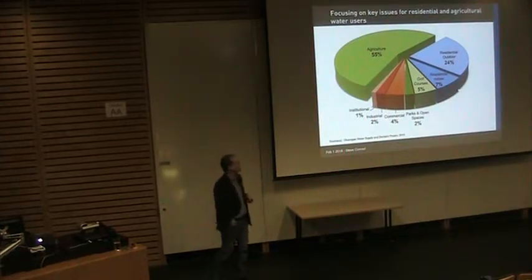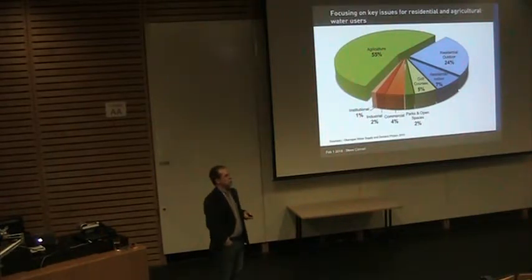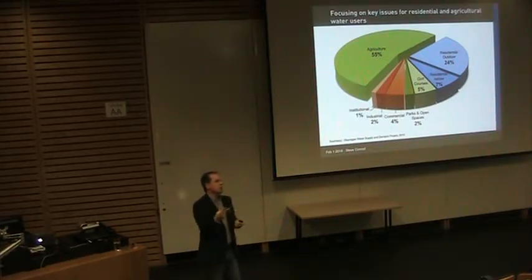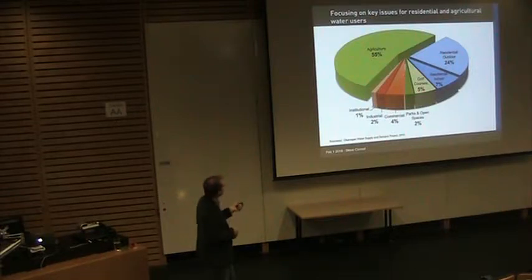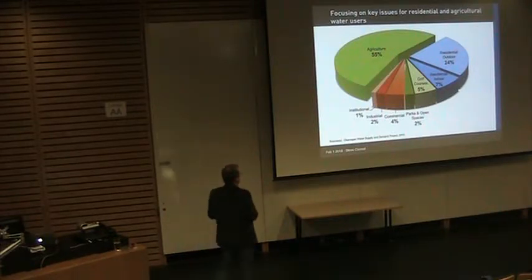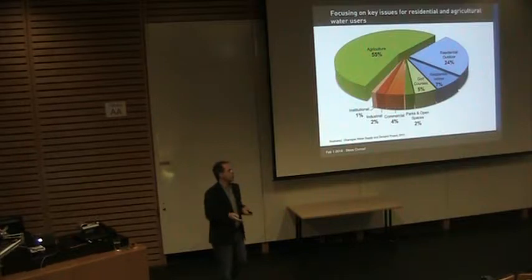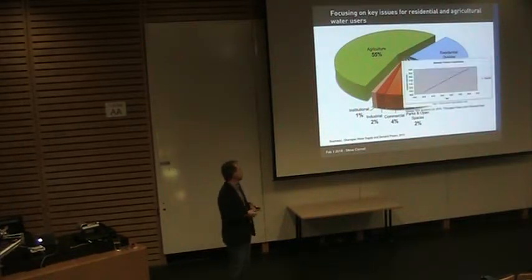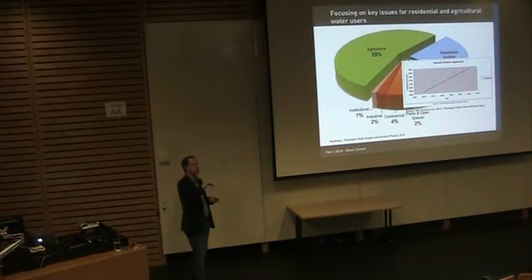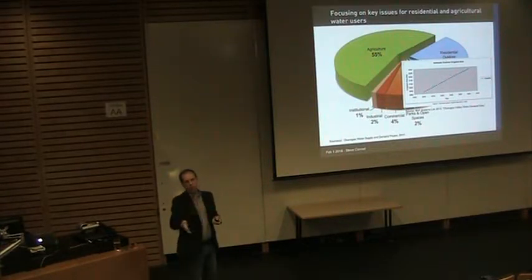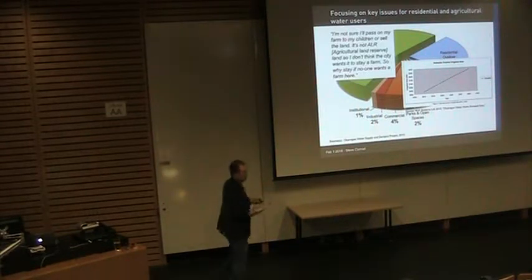In the Okanagan, we want to look at key water users. Looking at a pie chart of how water use is split up, two users represent a significant portion: agriculture uses about 55% of the water, and residential outdoor use accounted for almost 25% of all water in the Okanagan in 2010 — and that proportion looks set to continue increasing as more people move in and more lawns are created.